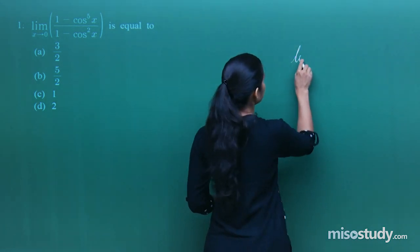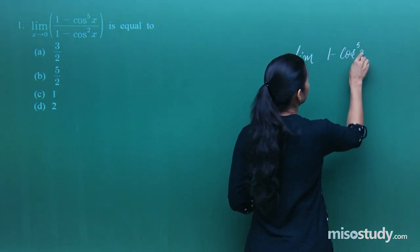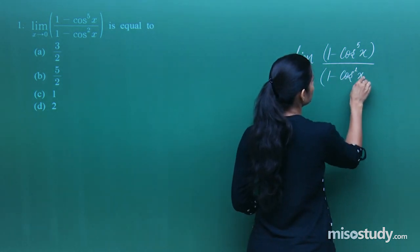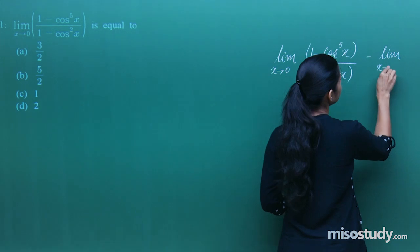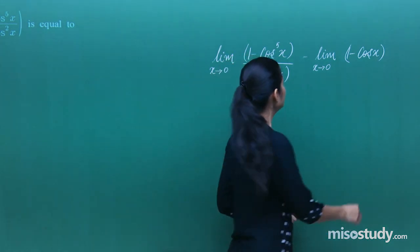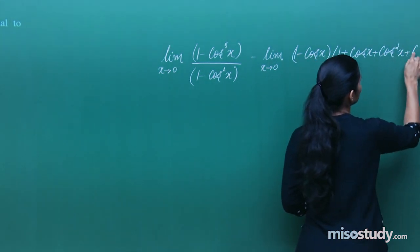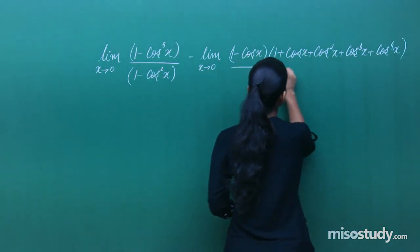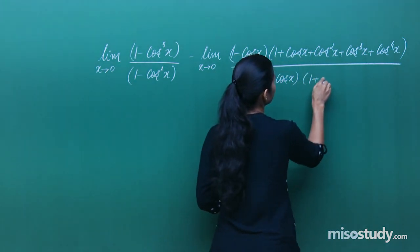The moment you see 1 minus cos⁵x in the numerator and 1 minus cos²x in the denominator, you can dissolve the numerator. We expand this as (1 minus cosx)(1 plus cosx plus cos²x plus cos³x plus cos⁴x), and the denominator 1 minus cos²x is (1 minus cosx)(1 plus cosx).